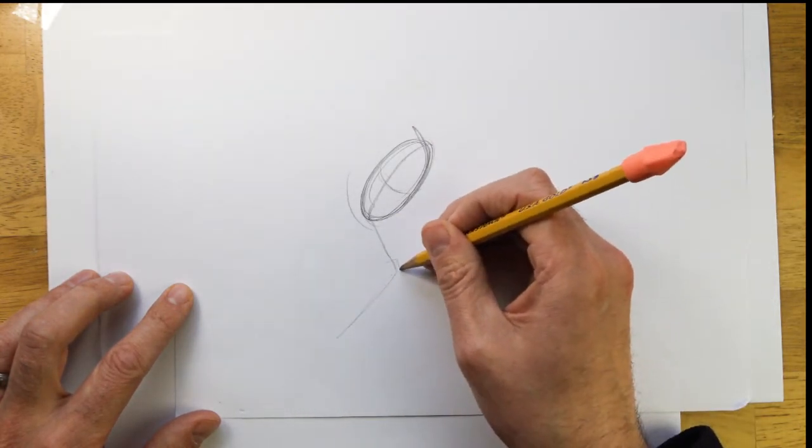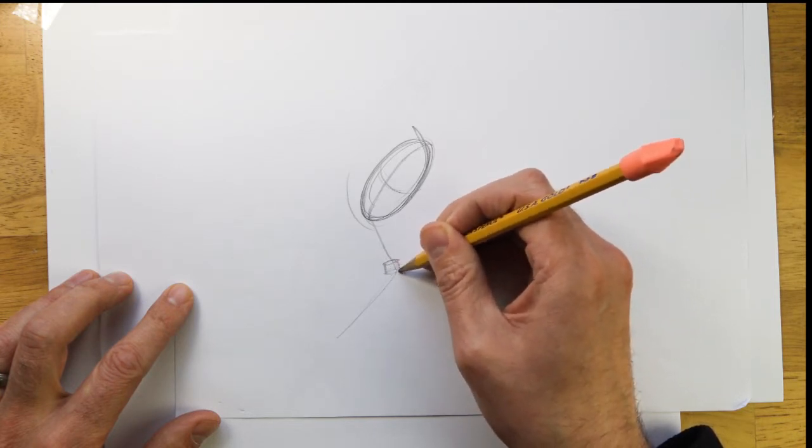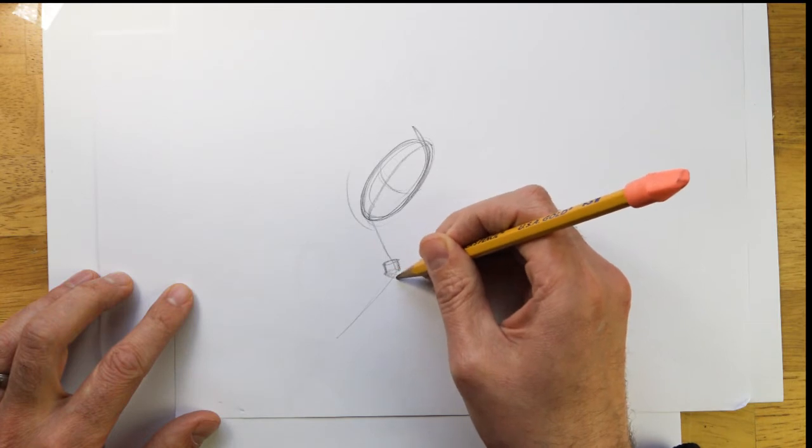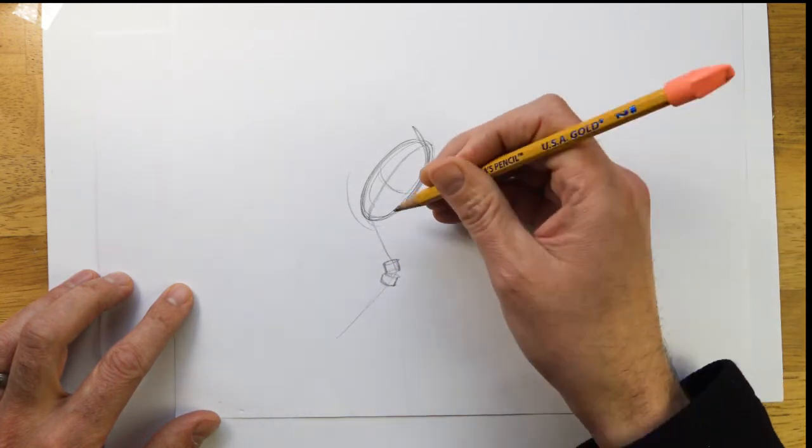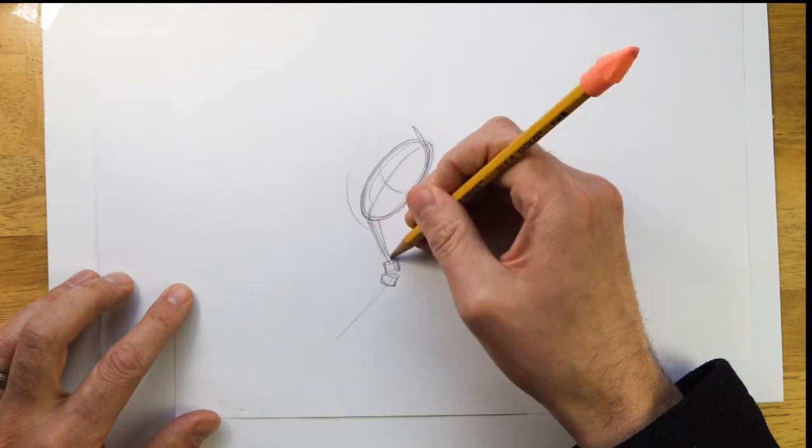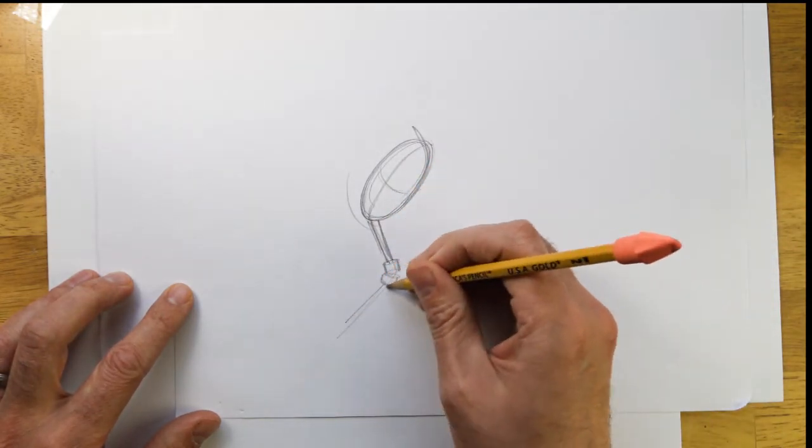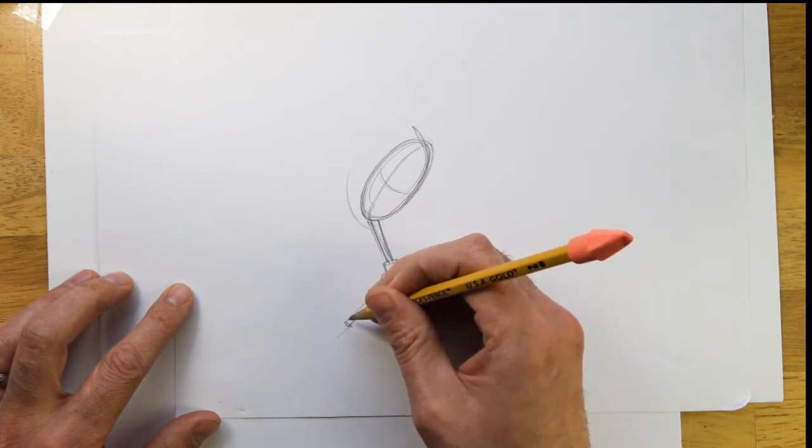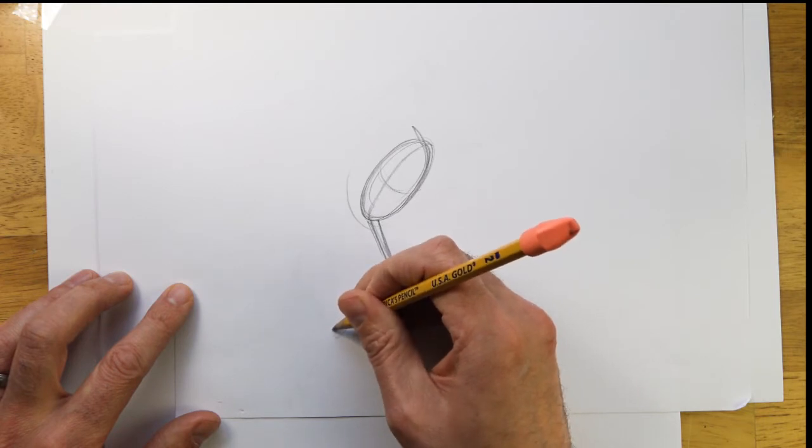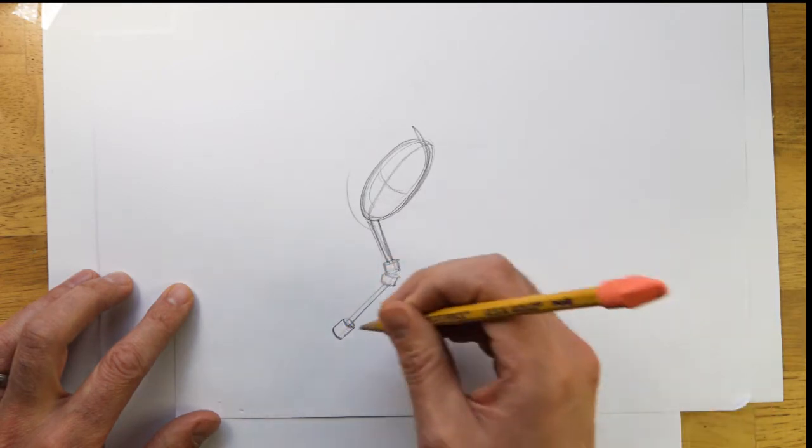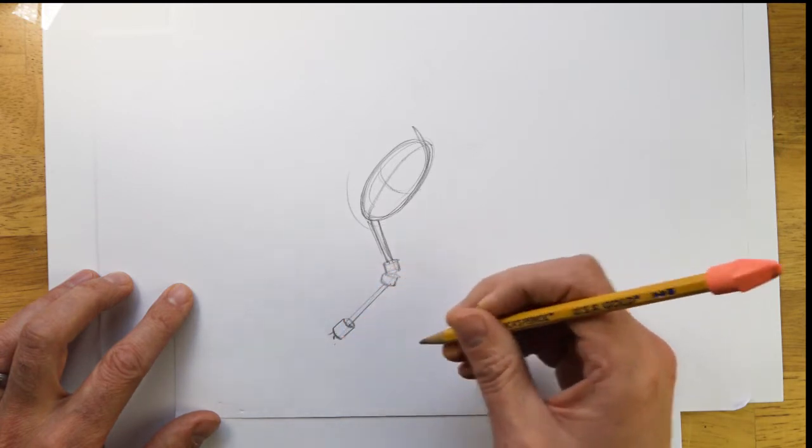We're going to draw in the joint area. For now we're just going to add some cylinders. We'll connect that to some poles. Some more poles connected to another cylinder.